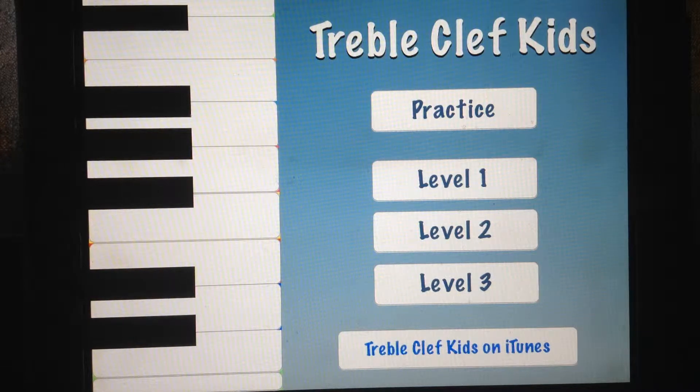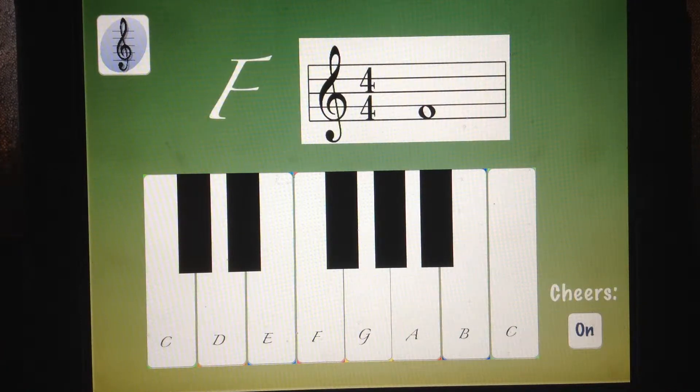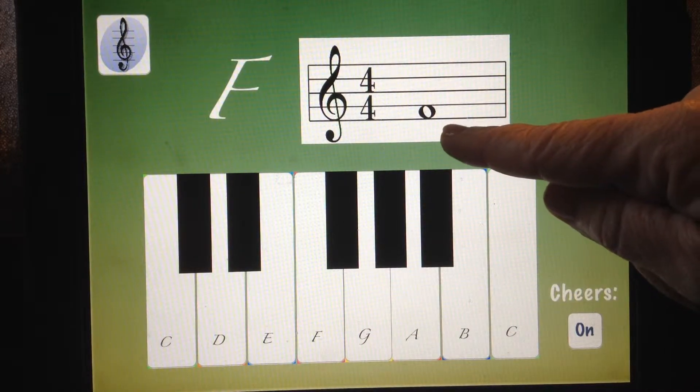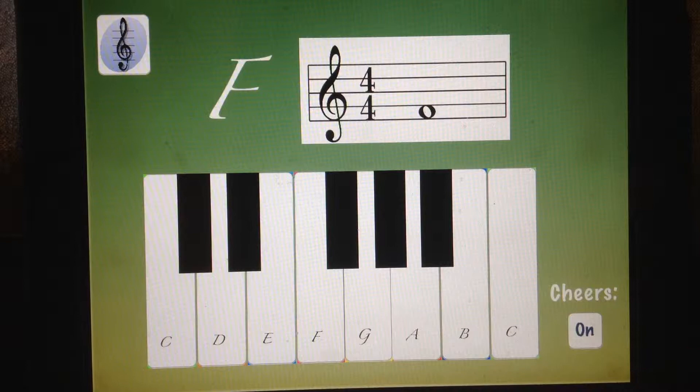We have three progressive levels with Treble Clef Kids. Let's start with level one, and you'll hear a cute little boy name the note. The note is on the staff here, and then you're going to find it on the keyboard.